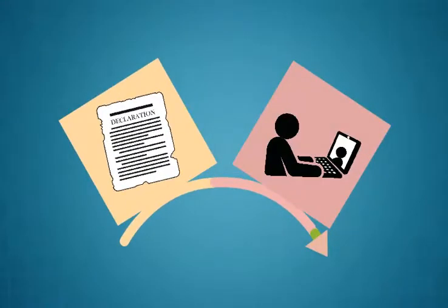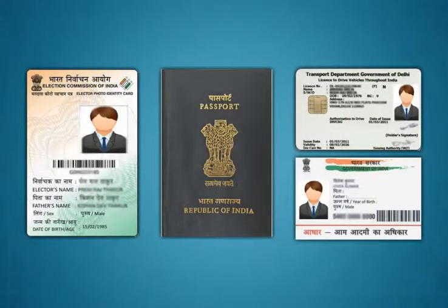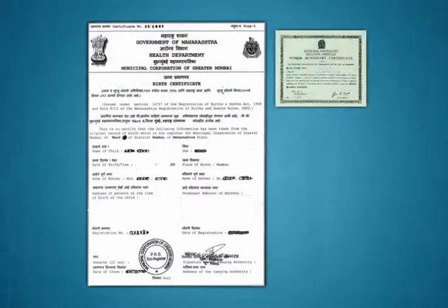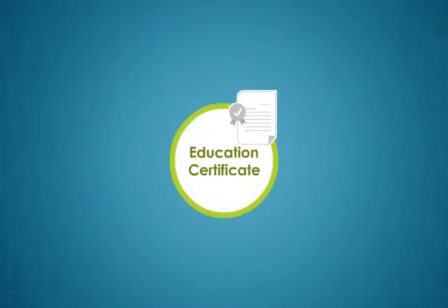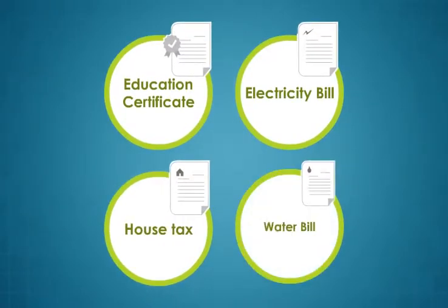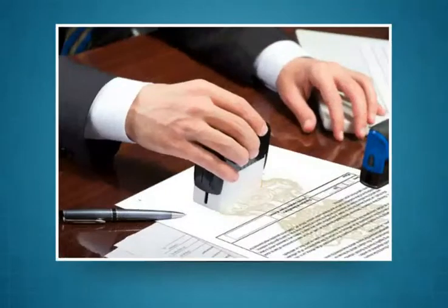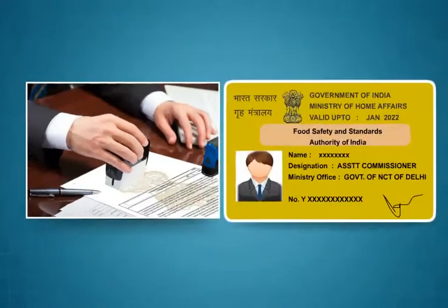The photograph of the applicant will be captured through web camera at the time of submission of application or at the time of verification. The photograph of the applicant should match with the photo on the Aadhaar. Any of your present residential proof document as mentioned earlier, proof of date of birth like birth certificate, school certificate or passport, and proof of continuous stay in Delhi for the last 3 years such as education certificate, electricity bill, house tax, water bill, etc. Note that all documents need to be attested by a gazetted officer. You must also attach a copy of his ID card along with his contact number.